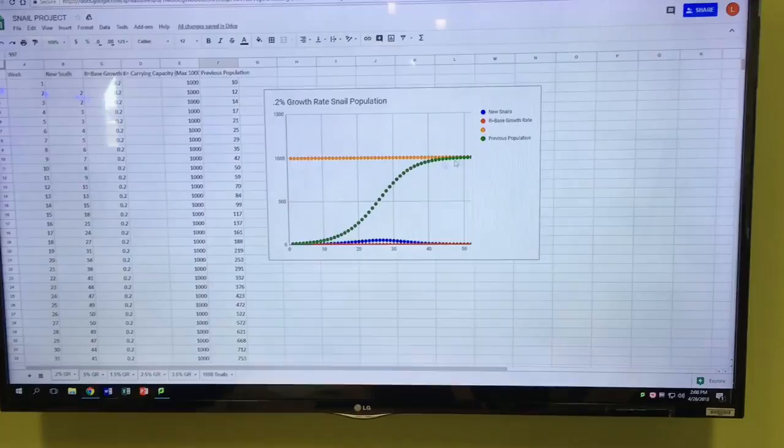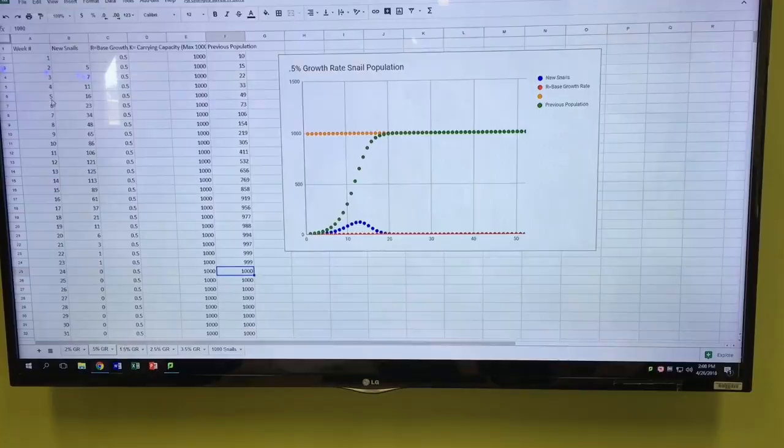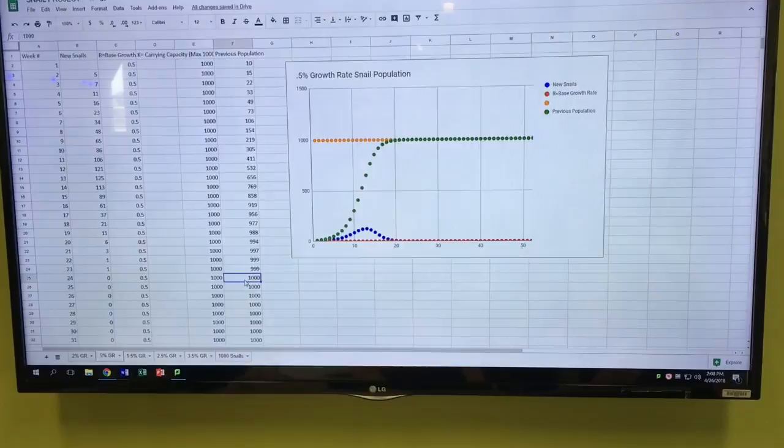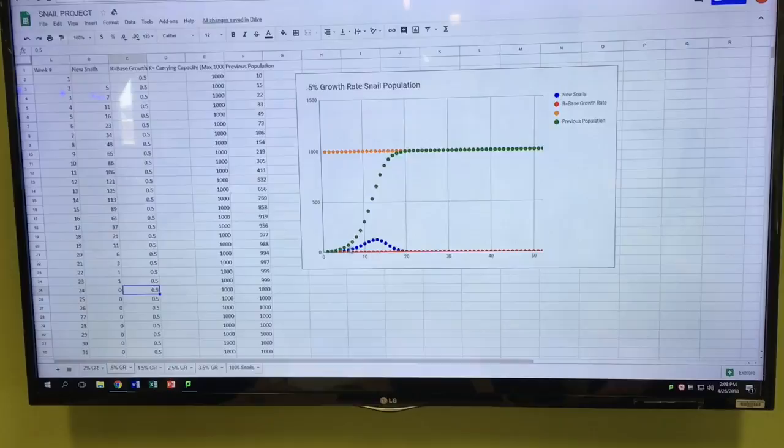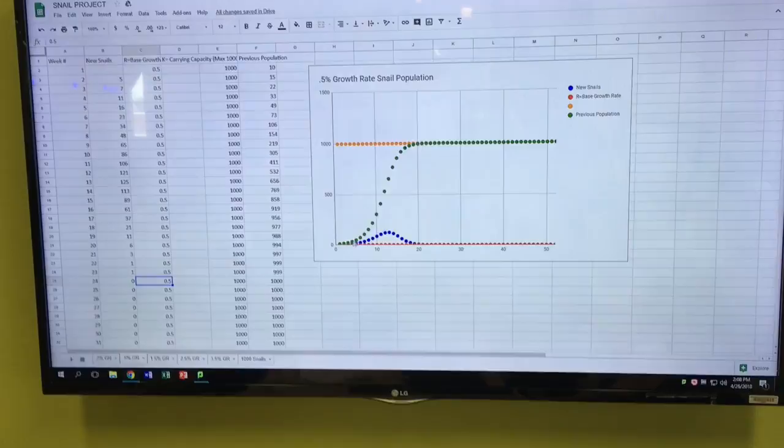And then for the second graph, we reached the carrying capacity by week 24 at a 50% rate. And with the increased 50% rate, we can see the increase in the sharpness of the curve, but we're still able to see a nice S-shape in here.